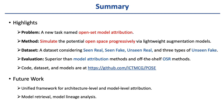In summary, in this paper we propose a new task named Open Set Model Attribution, and propose a novel solution by simulating the potential open space progressively with lightweight augmentation models. We construct a dataset considering seen-real, seen-fake, unseen-real, and three types of unseen-fake. The evaluations show that our method is superior to existing model attribution methods and off-the-shelf open set recognition methods. For future work, it is promising to construct a unified framework for architecture and model-level attribution, and to move from model attribution to model retrieval and model lineage analysis.